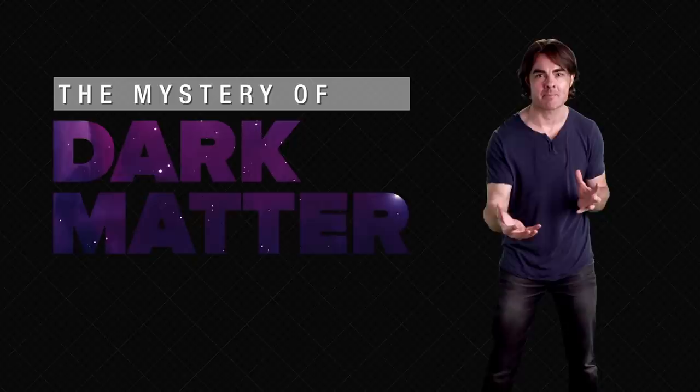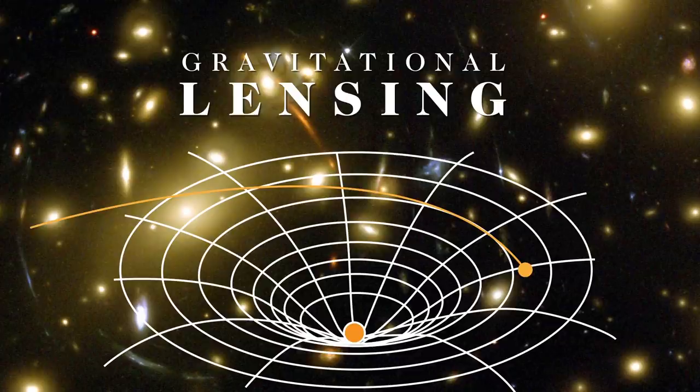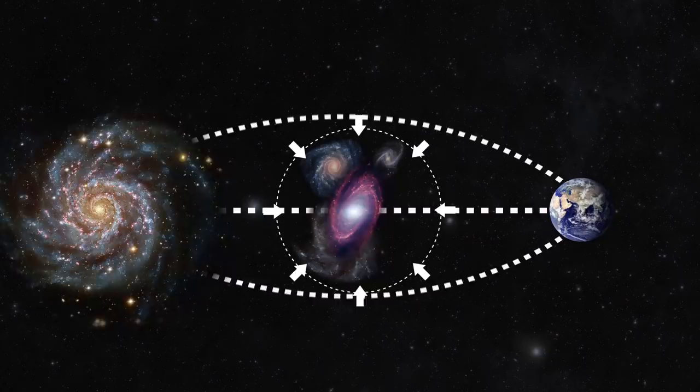Before we get into figuring out exactly what dark matter is or isn't, I want to give you completely independent evidence for its existence. Gravitational lensing. Thanks to general relativity, we know that light follows the curved geodesics of a gravitational field. Place a strong gravitational field on an axis between a light source and an observer, and voila, you basically have a lens.